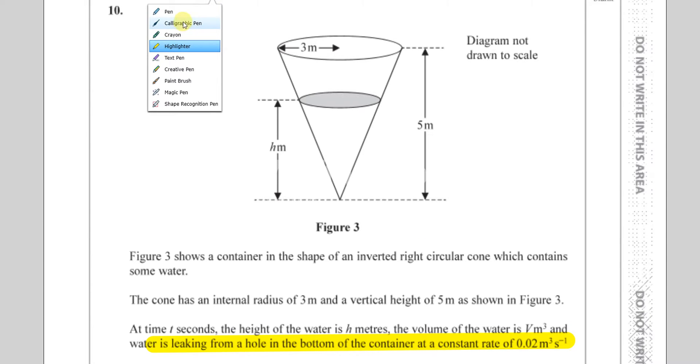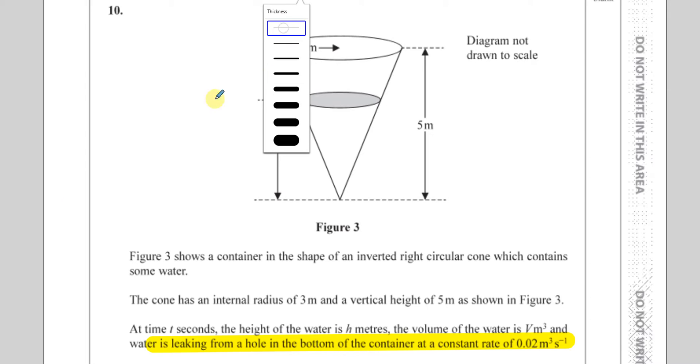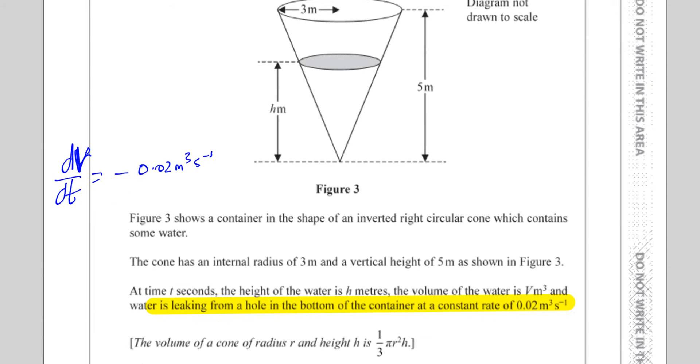So what we can say is, from this information here, from the fact that it's leaking from the hole in the bottom of the container at a constant rate of 0.02 meters per second, what we can get from that is the volume is leaking. So it's dV/dt, the rate of decrease of the water. As it's leaking out, so it's going out of the container, it's going to be minus 0.02 meters cubed per second. That's dV/dt.